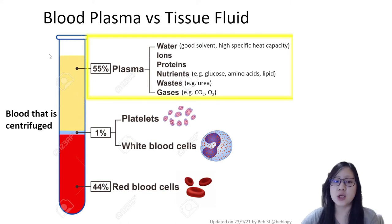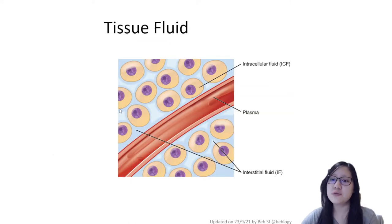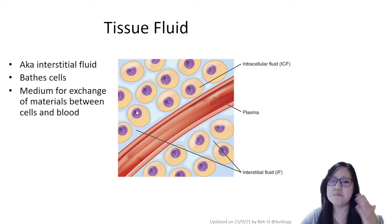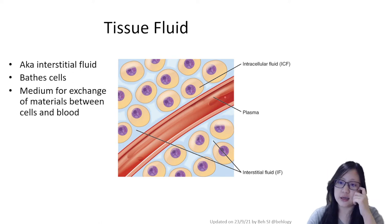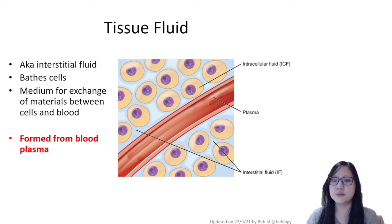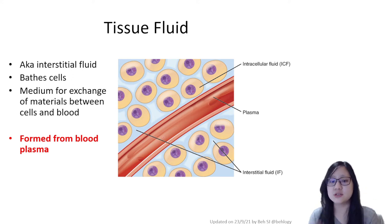Blood plasma is found in your blood, which is in your vessels. Tissue fluid, or interstitial fluid, is fluid that's outside the vessels, bathing the cells, and acts as the medium for exchange of materials between the cells and the blood. Tissue fluid is actually formed from blood plasma — although they are in different places, tissue fluid is formed from blood plasma and would eventually be returned to the blood.